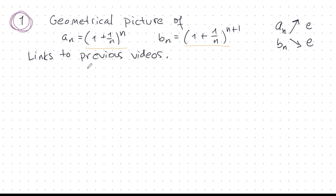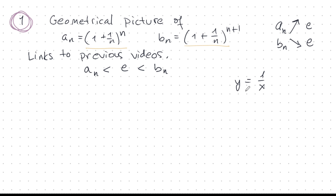We can write this as: AN is always less than E, and E is always less than BN. We're going to provide a geometrical picture of all this in this video. The first thing I want to do is take the curve Y = 1/X and take the harmonic sequence 1/N and plot these things.